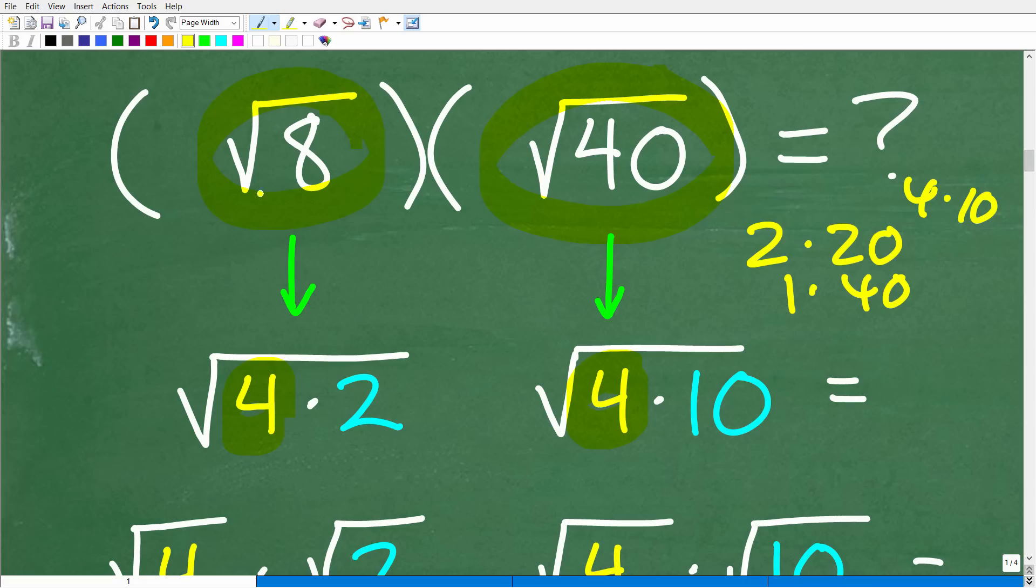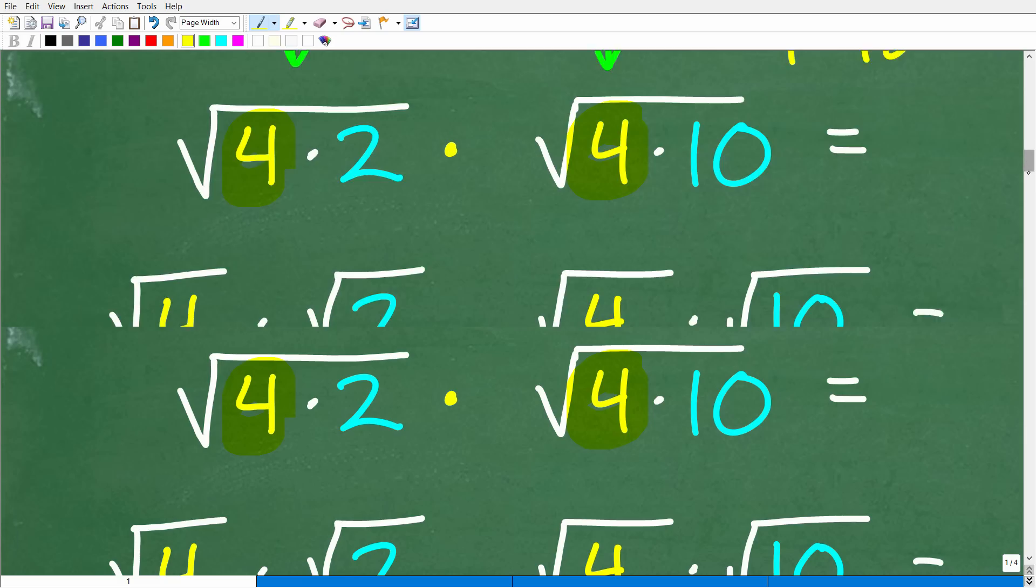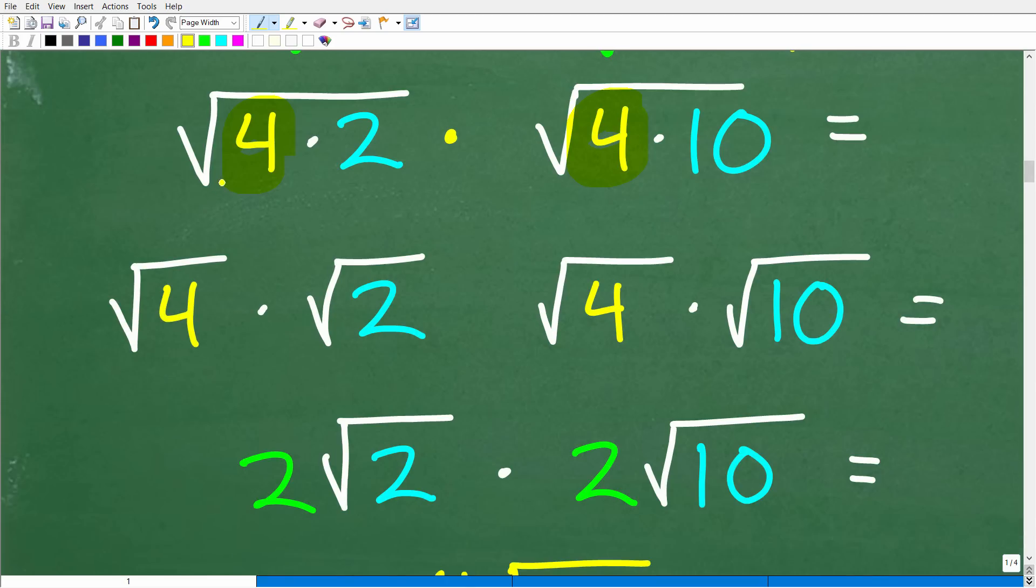We have the square root of 8, which is the same thing as the square root of 4 times 2, times the square root of 40, which is the same thing as the square root of 4 times 10. Now, let's break up all these square roots into their own individual square roots. So, the square root of 4 times 2, I could write it as the square root of 4 times the square root of 2 times the square root of 4 times the square root of 10.